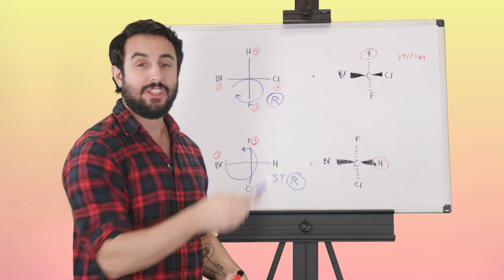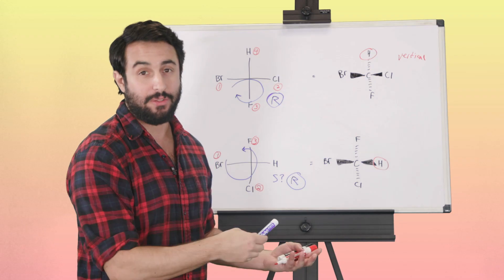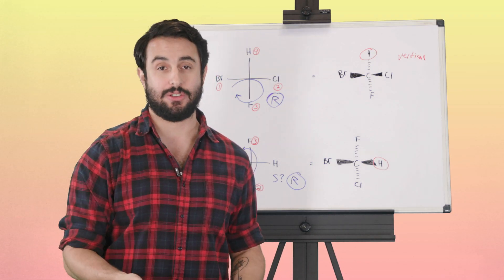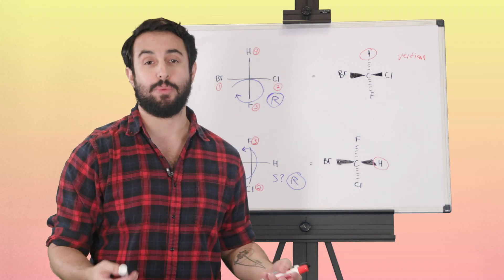That will account for the fact that the lowest priority group was actually towards us rather than away from us. So that's the easiest way to assign R and S to stereocenters when molecules are drawn in Fisher projection form.